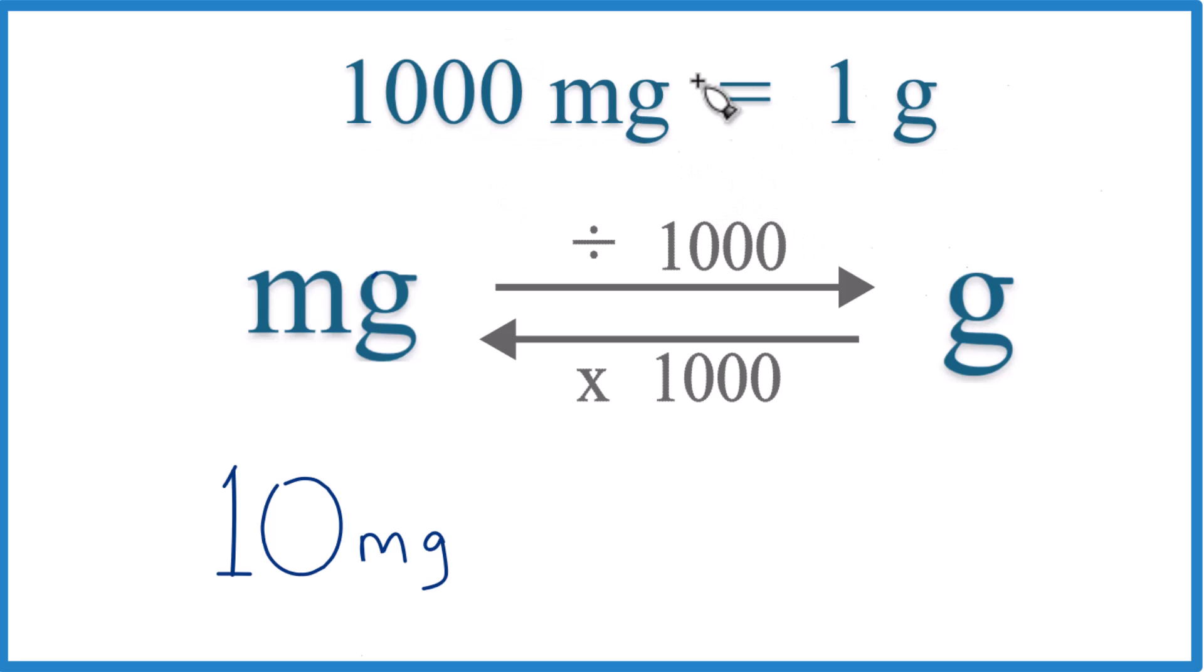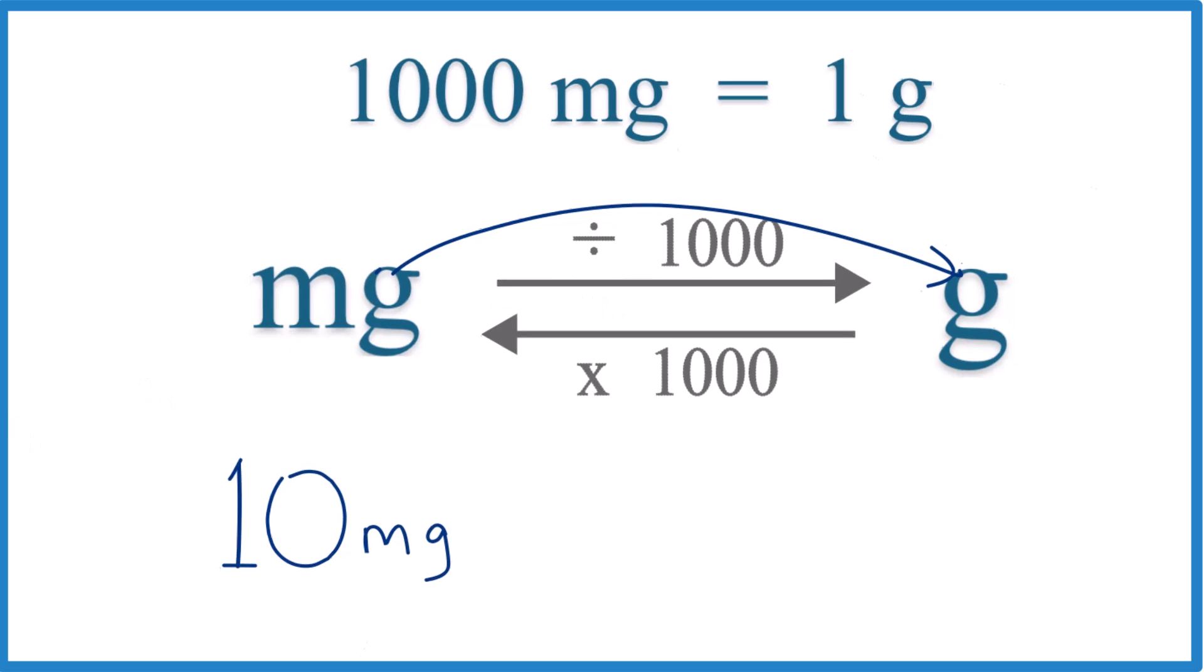We call this a conversion factor, and we need that when we convert from milligrams to grams or grams to milligrams. We have 10 milligrams. We want that to get to grams. So milligrams to grams, we divide by 1,000 like this.